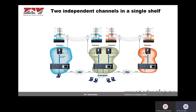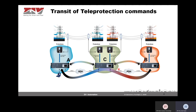The next example is two independent teleprotection terminals in a single shelf. Here, in the substation in the middle, we can see one TPU device equipped with two communication interfaces. In that case, this device is acting as two independent teleprotection units — a very cost-effective solution, because you only use one teleprotection device instead of two, and you are able to communicate to both the substation on the left and the substation on the right. It is also possible to equip this unit with a redundant power supply.